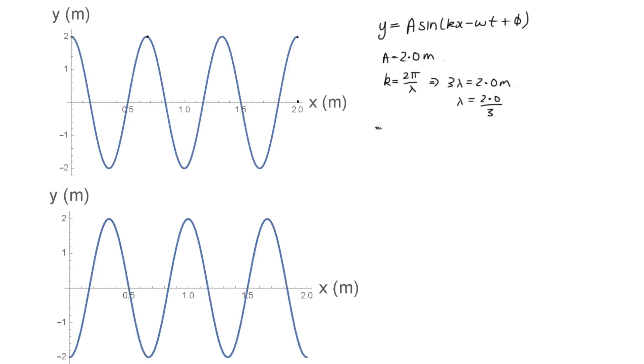So we can now get k, so k is equal to 2 pi over 2 on 3, so these 2's cancel out and we can multiply the top and the bottom both by 3 and we end up with 3 pi. So we've got k is 3 pi now, so so far, let's write this in blue, what we've got so far is y is equal to 2 sine 3 pi x minus omega t plus phi.